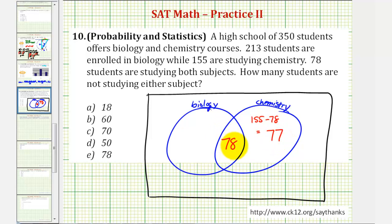So we know there are 78 students taking both biology and chemistry, and there are 77 students taking just chemistry. Now we know there are 213 students enrolled in biology. Of these 213, 78 are already in here. So the students only taking biology in this set would be 213 minus 78, which is equal to 135.